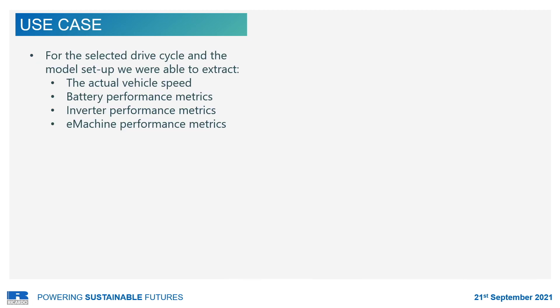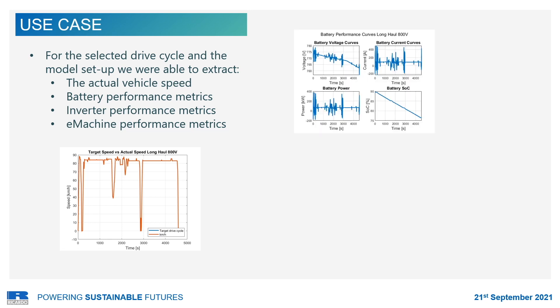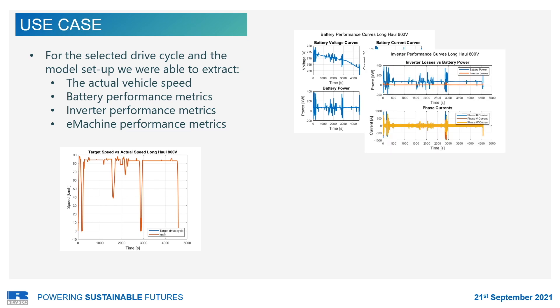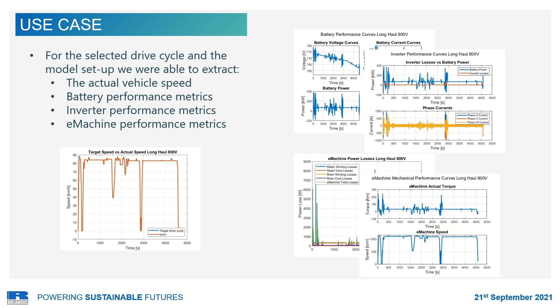After setting up the co-simulation system model and selecting a relevant drive cycle, we were able to carry out vehicle-level simulations. From the results, we can evaluate quantities such as vehicle actual speed, which closely follows the drive cycle speed demand. We can extract state of charge drop, terminal voltage, and power delivered and regenerated to evaluate battery performance. We can extract inverter performance curves such as inverter losses and output phase currents, evaluate overall losses of the electric motor, and extract electric motor mechanical performance curves such as speed and torque.